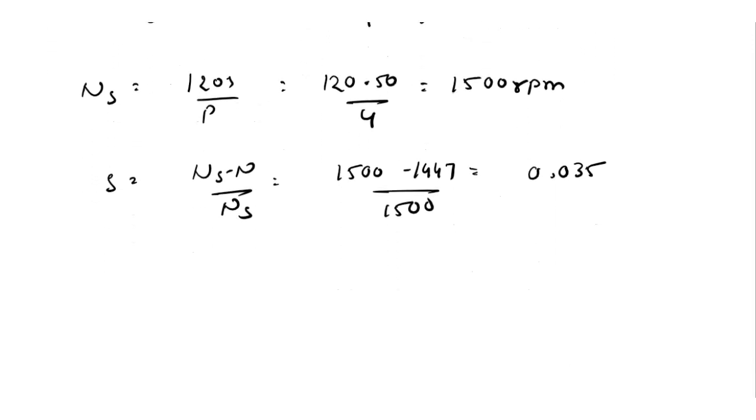Now R is equal to r1 plus r2 dash, which is equal to 0.2 plus 0.4, which is equal to 0.6. X is equal to x1 plus x2 dash, which is 2 plus 2, which is 4.